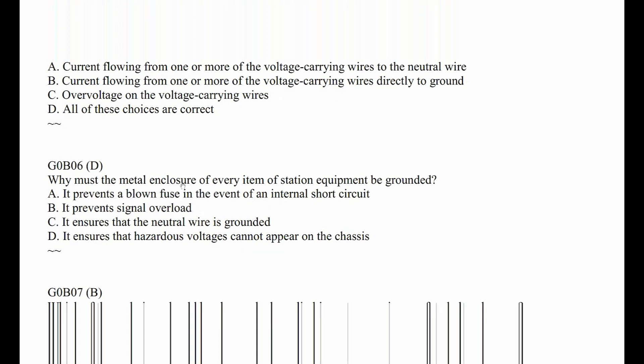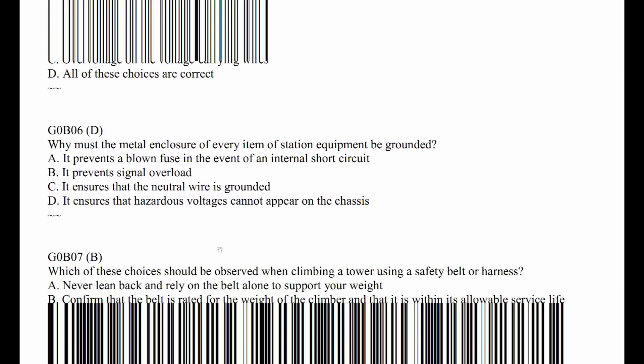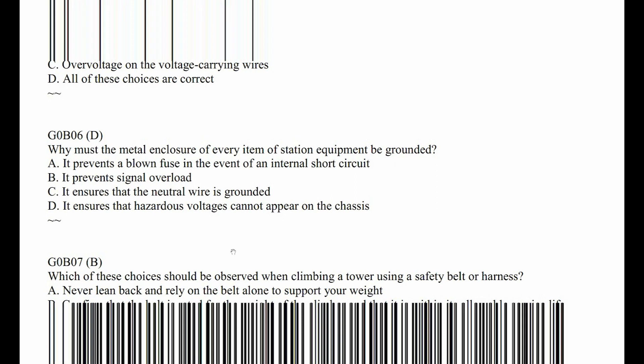G0B06: Why must the metal enclosure of every item of station equipment be grounded? To prevent electrocution — so it's to remove hazardous voltages. There is a video out there where the manufacturer of microphones recommends clipping the ground connection if you have AC hum on the audio. Don't do that.